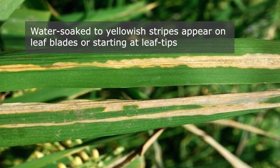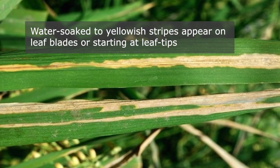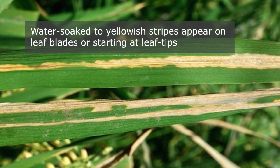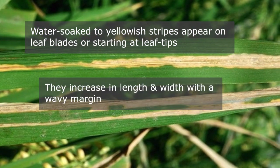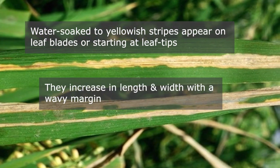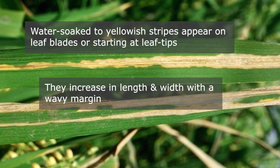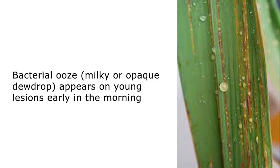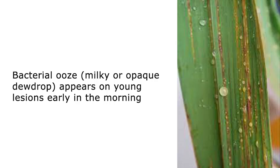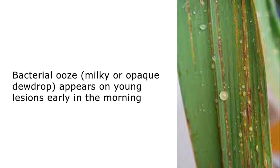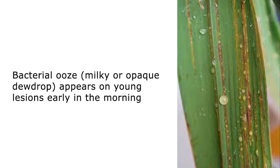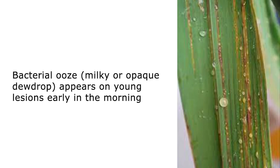Water-soaked to yellowish stripes on leaf blades, starting at leaf tips, appear and later increase in length and width with a wavy margin. Bacterial ooze that looks like a milky or opaque dewdrop appears on young lesions early in the morning.